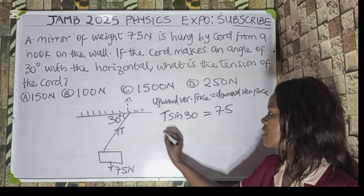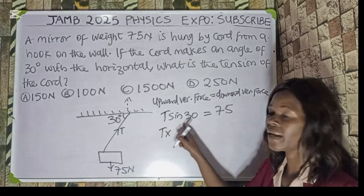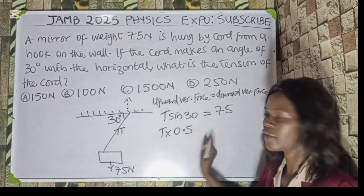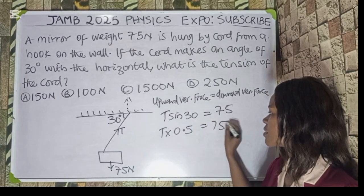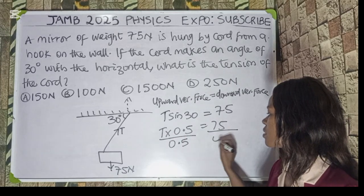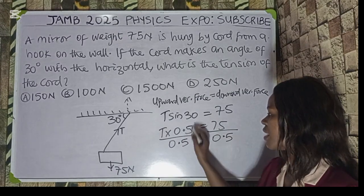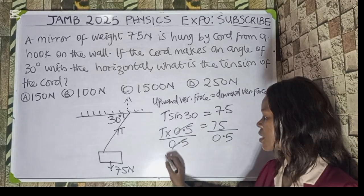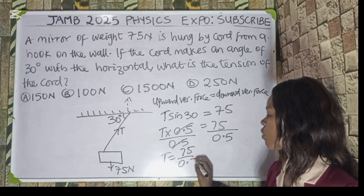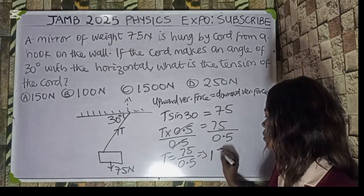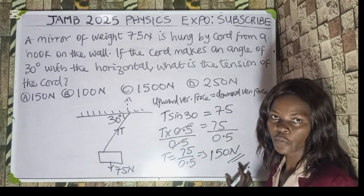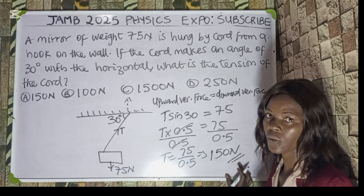Now let's work it out. T multiplied by sine theta — sine 30 is 0.5 — equals 75. We divide both sides by 0.5. So the tension equals 75 over 0.5, which equals 150 newton. So the correct option to this question is option A.